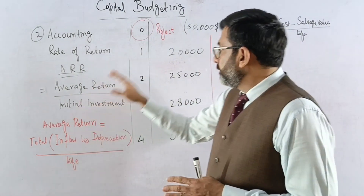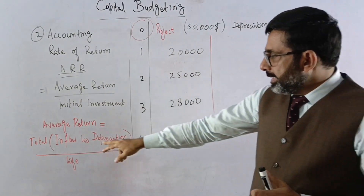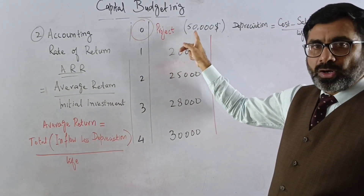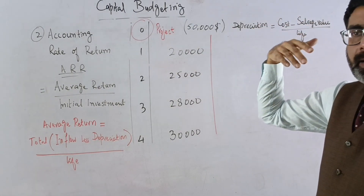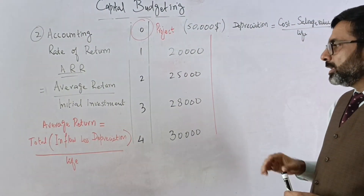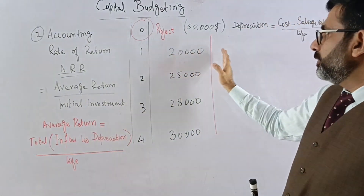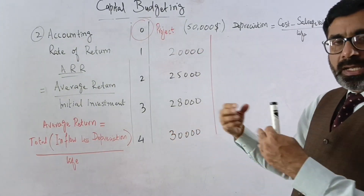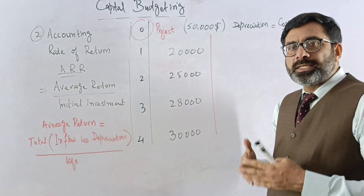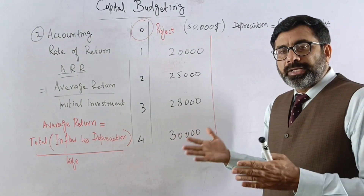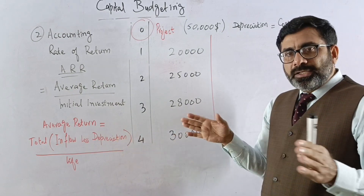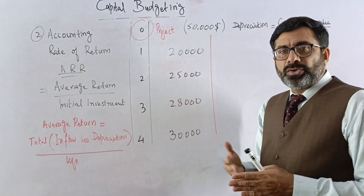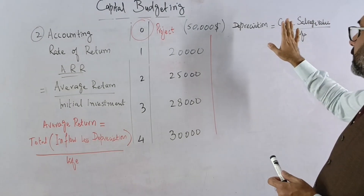We list the inflows for years one through four, and then we subtract depreciation. The project cost is 50,000, and the salvage value is 10,000. From every inflow value, we subtract the depreciation to get the return. We then total these values and divide by the asset life to get the average.